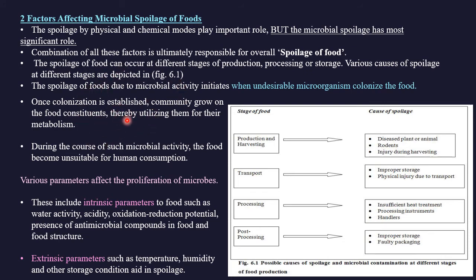Factors affecting microbial spoilage include intrinsic factors such as water activity, acidity, oxidation-reduction potential, presence of antimicrobial compounds in food, and food structure. Extrinsic factors include temperature, humidity, and other storage conditions which aid spoilage. Detailed videos on intrinsic and extrinsic parameters are already uploaded on the channel.